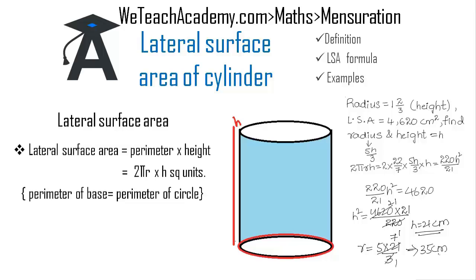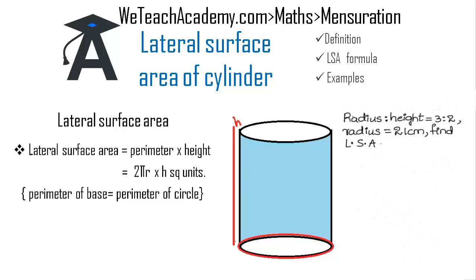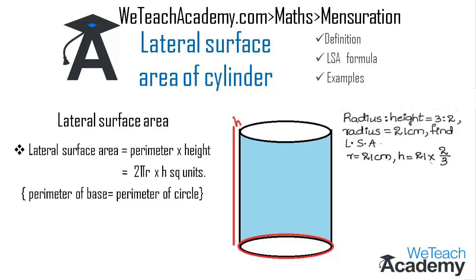Coming to the next example: the radius of the base and the height of the cylinder are in the ratio 3:2, and the value of the radius is 21 centimeters. Find the lateral surface area. We are given radius = 21 cm. The height will be (2/3) of the radius, that is 21 × (2/3). Simplifying, 21 ÷ 3 = 7, and 7 × 2 = 14 centimeters, which is the height.